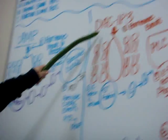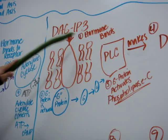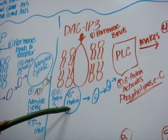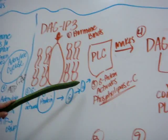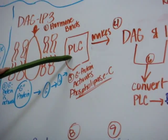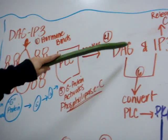Then we're going to talk about the DAG IP3 pathway. The hormone binds to the receptor, which activates the G-protein. From there, the G-protein activates phospholipase C. Phospholipase C makes DAG and IP3.